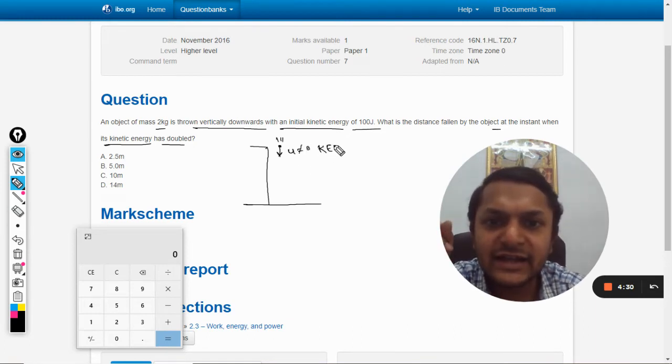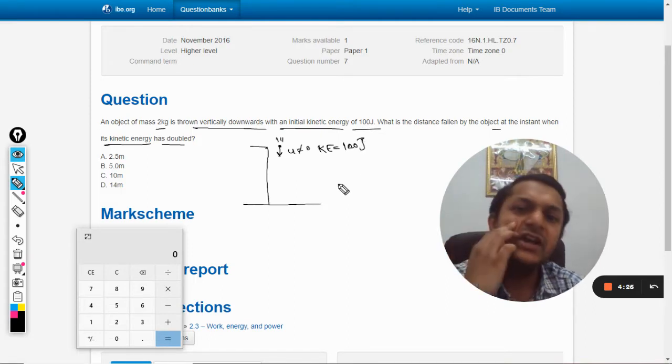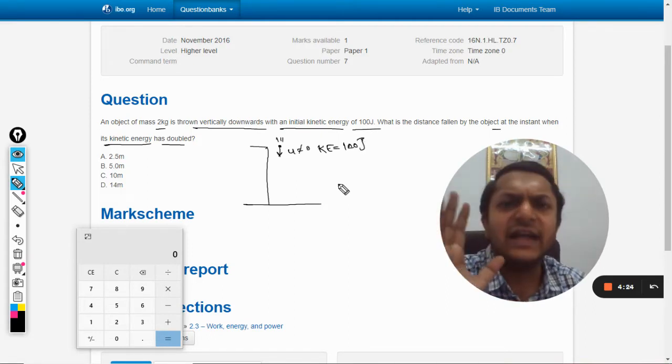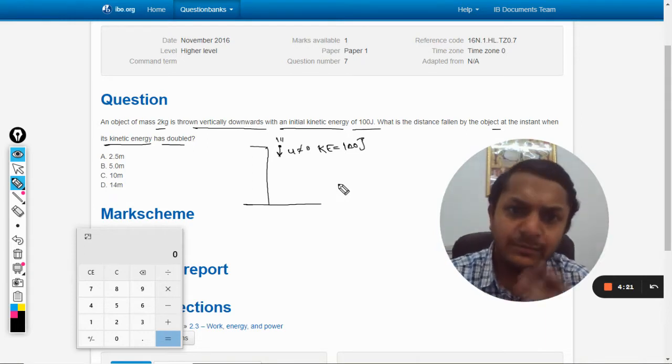It has a kinetic energy with itself and that is given as 100 joule. So we can find the velocity from this but that is not required. What is required in the question is the distance fallen by the object.